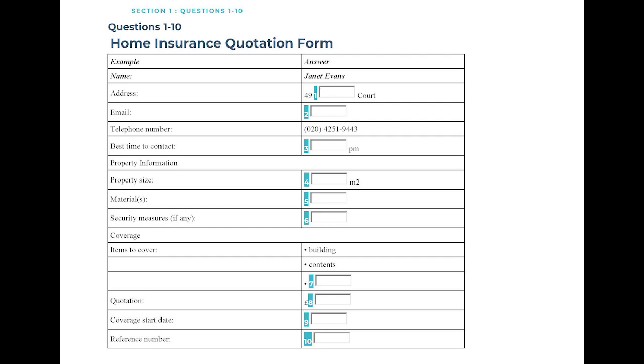Test 5. You will hear a number of different recordings and you will have to answer questions on what you hear. There will be time for you to read the instructions and questions and you will have a chance to check your work. All the recordings will be played once only. The test is in four sections. At the end of the test, you will be given ten minutes to transfer your answers to an answer sheet. Now turn to Section 1.